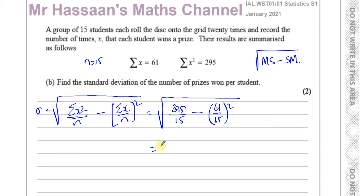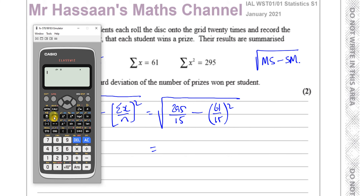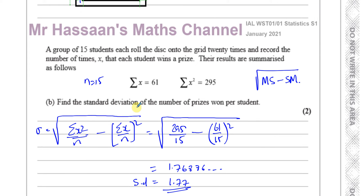That will give us the standard deviation of the number of prizes won per student. So we have the square root of 295 divided by 15 minus the bracket 61 over 15 squared. That gives us 1.7688... so rounding to 3SF: 1.77. That's the standard deviation of the number of prizes won per student. That's the answer to part B.